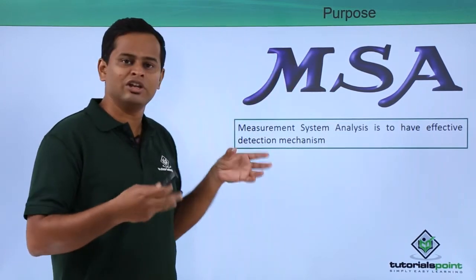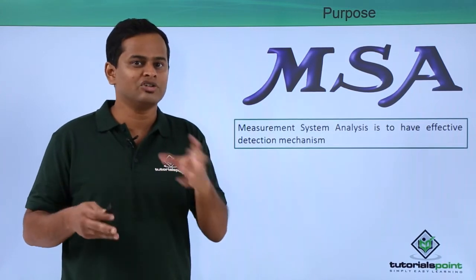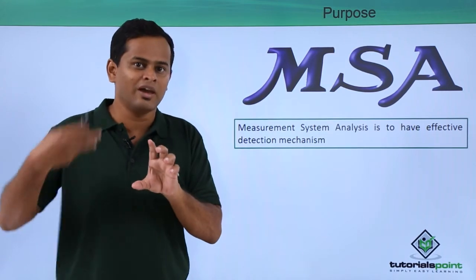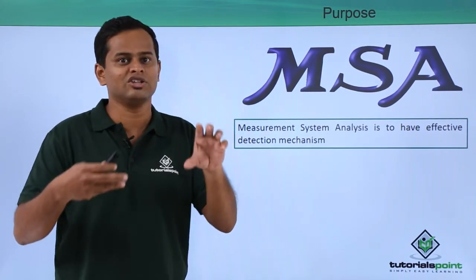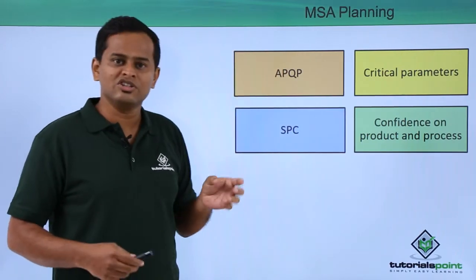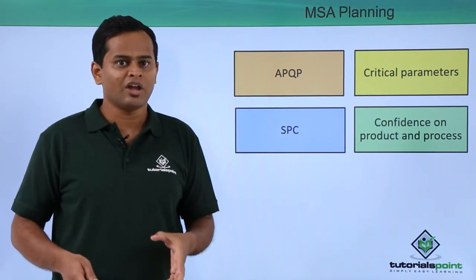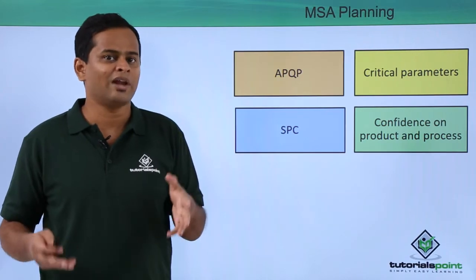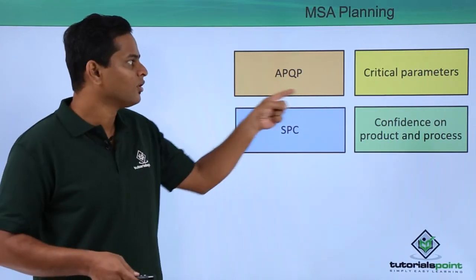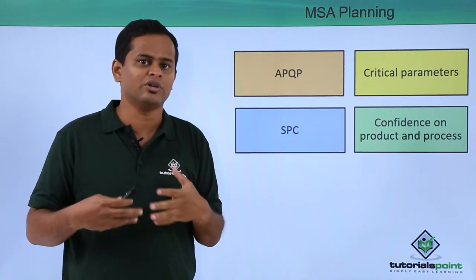Wherever and whenever we are measuring, we need to have an effective measuring system, because if we do not measure properly, there is a very high chance that we may over-correct certain things which are already doing well. So measurement system analysis planning is very important, and in advanced product quality planning (APQP) there should be a certain area for MSA — for which critical parameters we need to measure, we need to be clear.